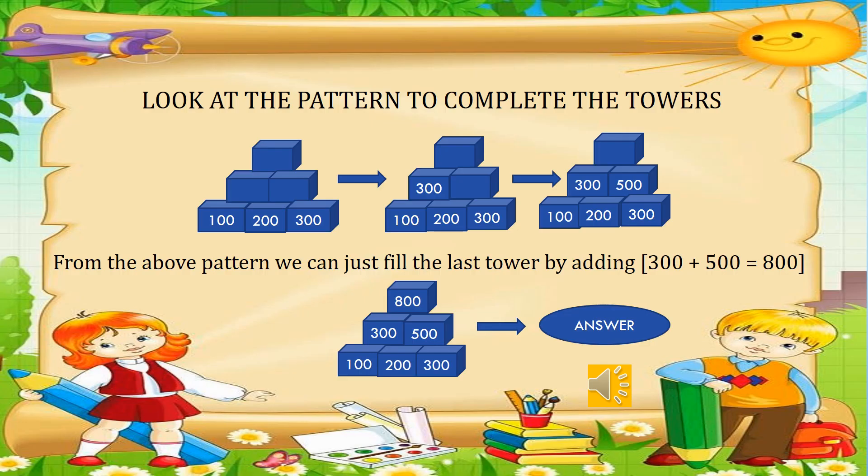Our next question: look at the pattern to complete the task. We have a tower and we need to start from the base. 100 plus 200 gives 300, written on top. 200 plus 300 gives 500, written next. Finally, we fill the last tower: 300 plus 500 gives 800. That is the pattern.